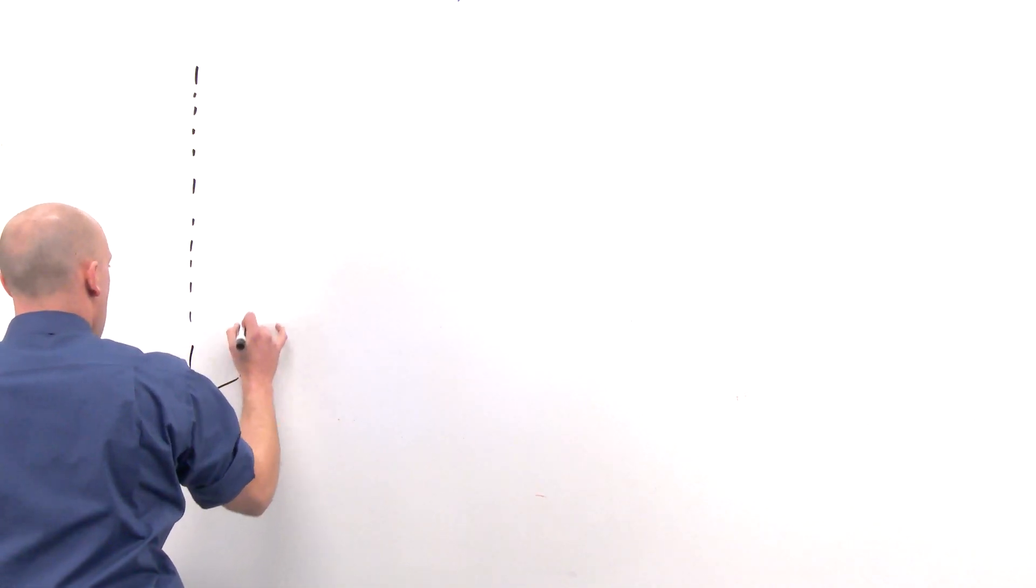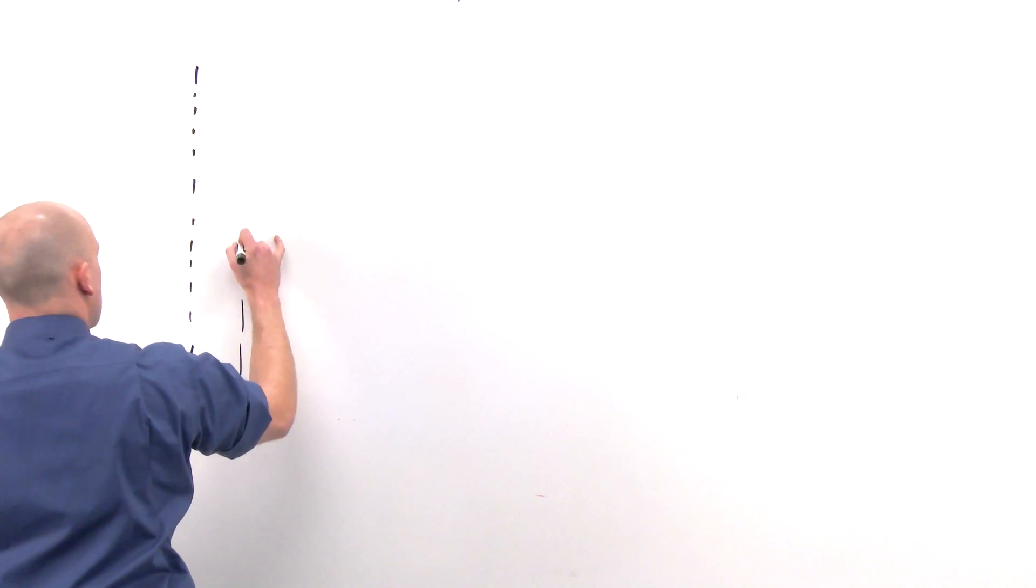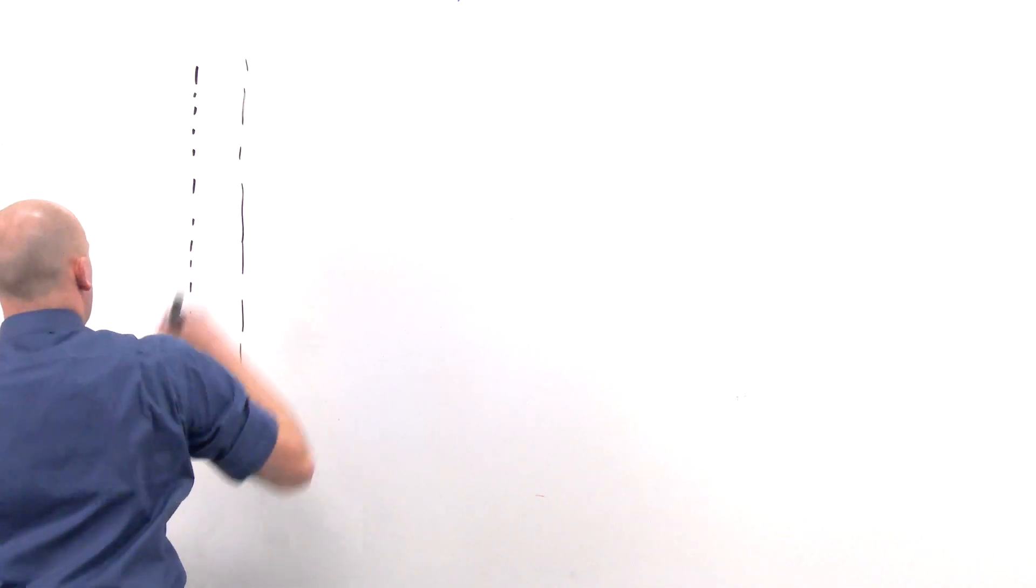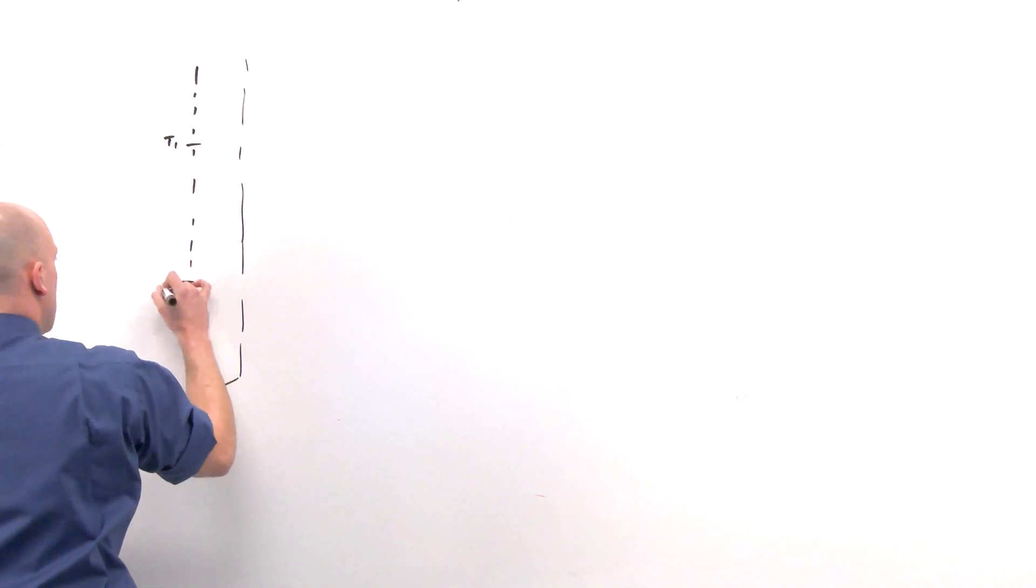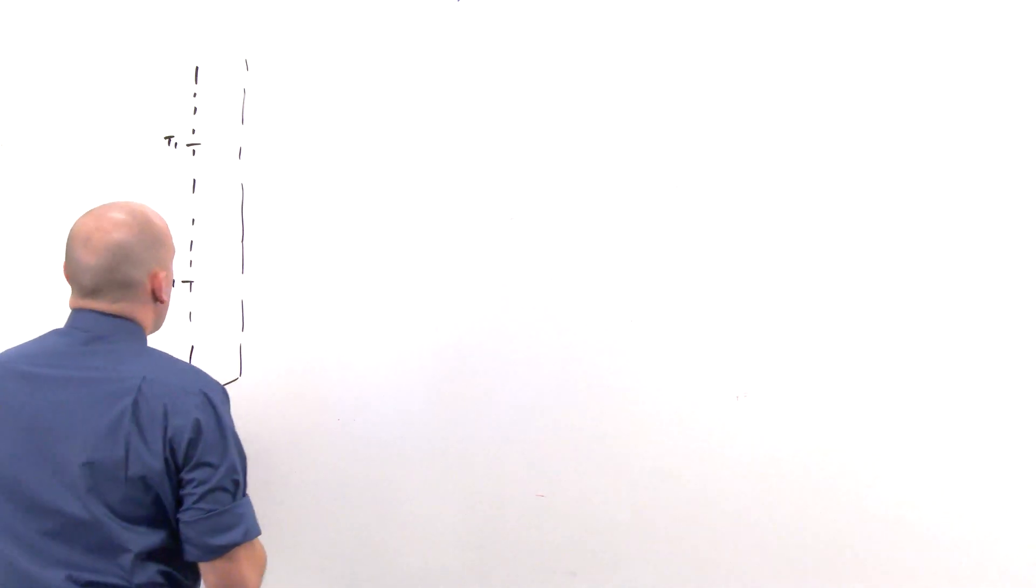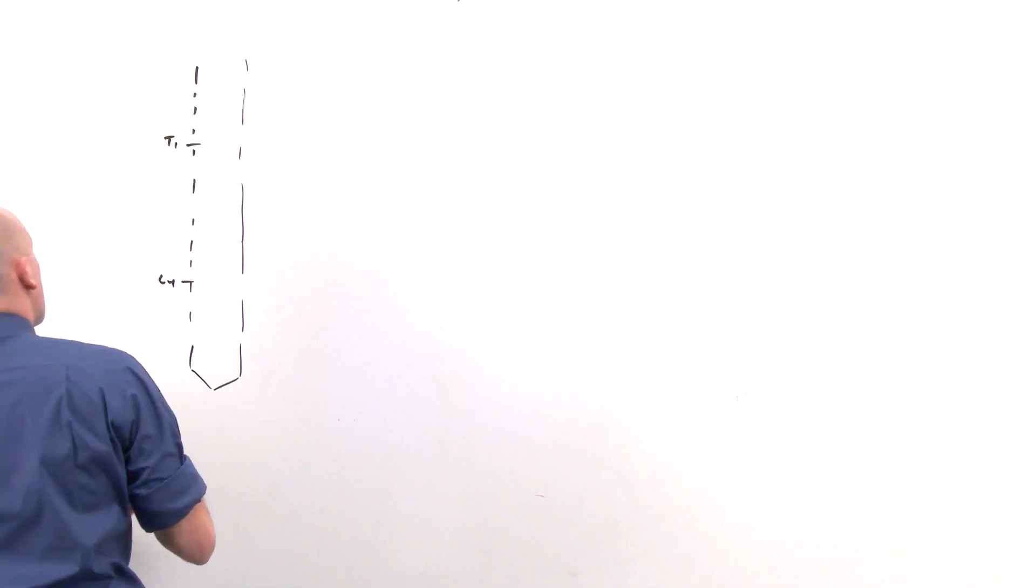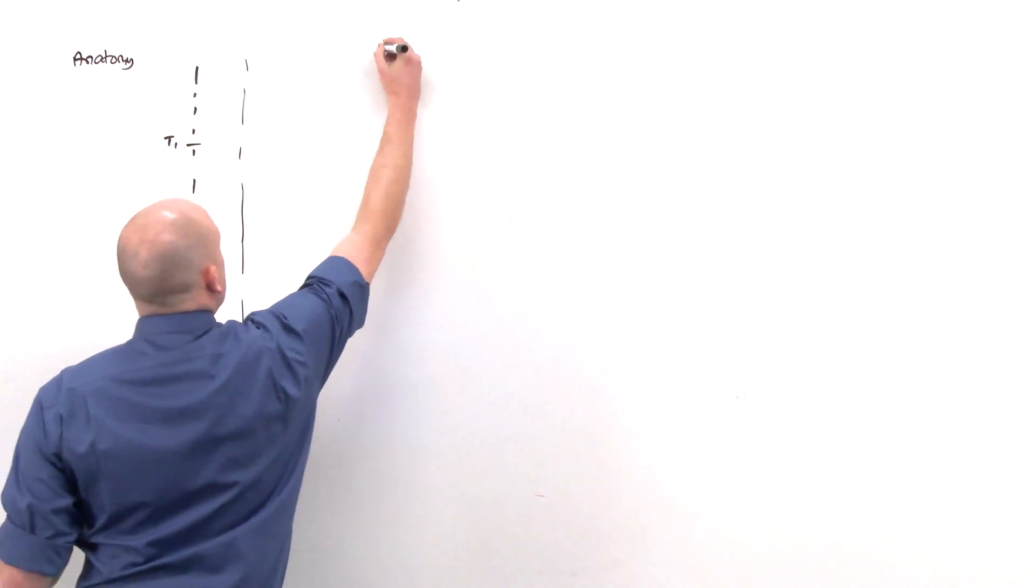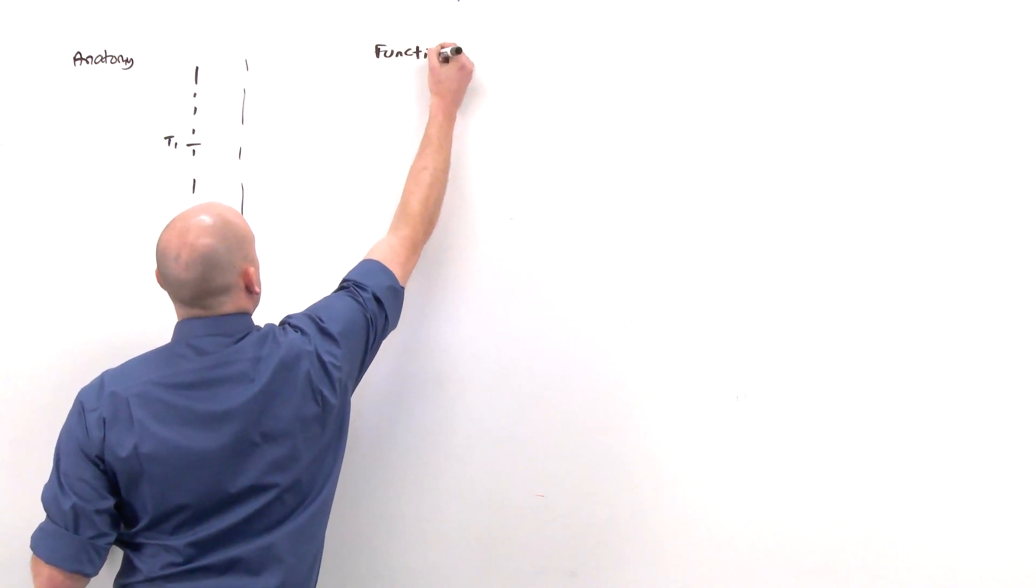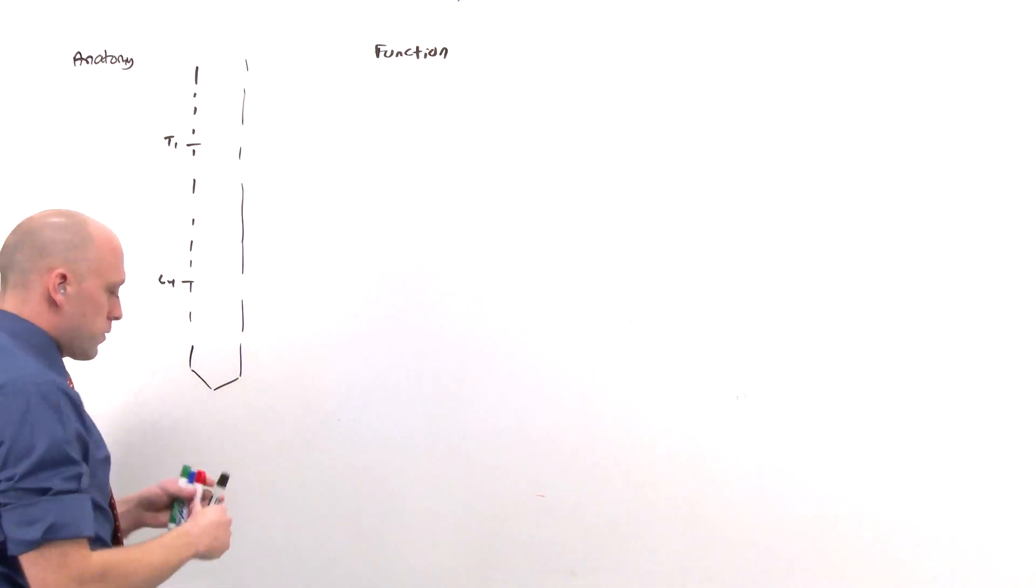This is the spinal cord. On the left is going to be the anatomy. On the right is going to be the function. Let's talk about the anatomy, the structure of the system first.